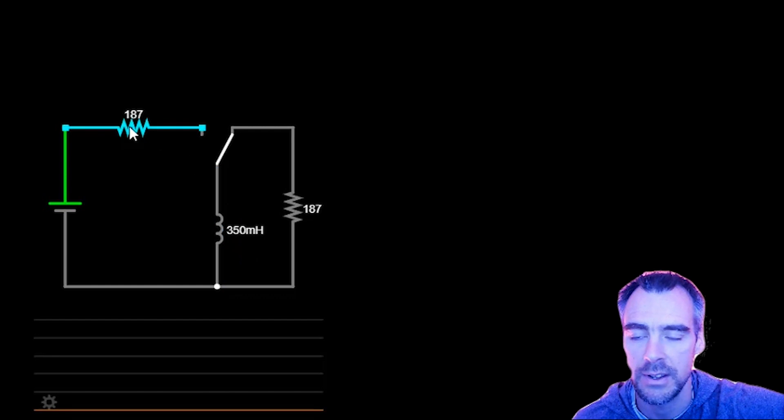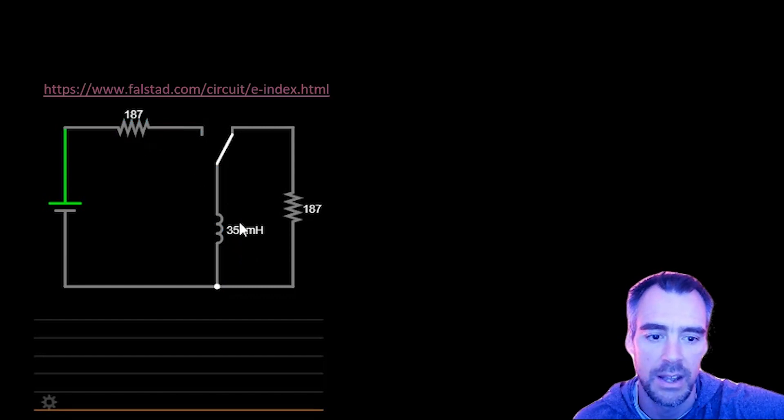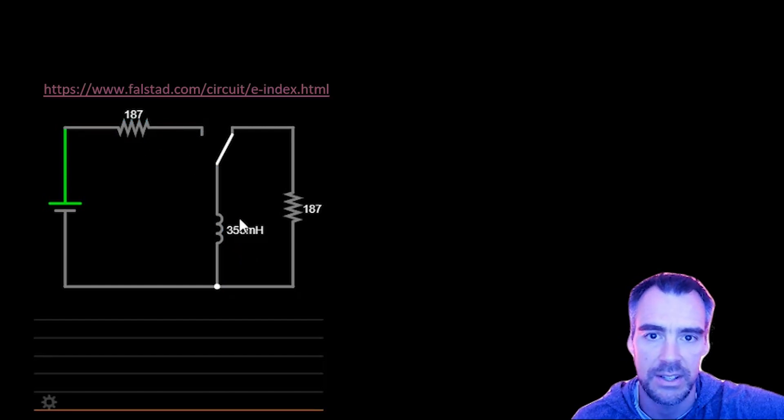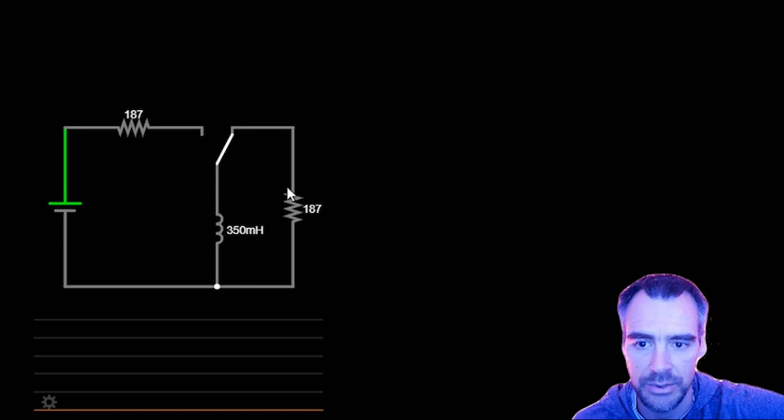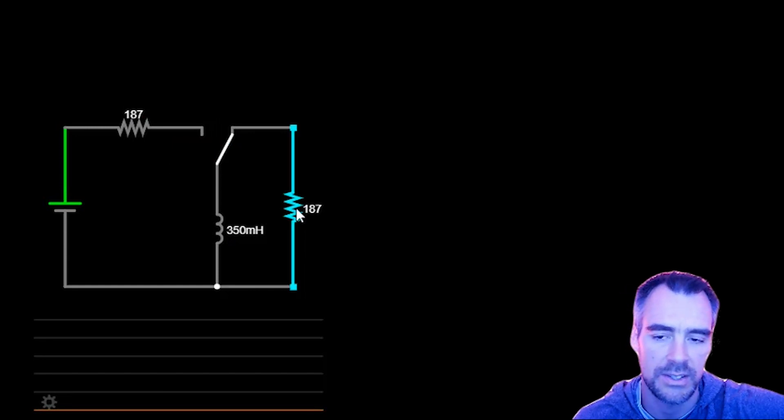First, let me start off with a discussion of just inductors and how they work. Let's check out this circuit here with Falstad.com, where you can make circuits and simulate them. Here we have a circuit with a DC voltage source, a resistor, and down here an inductor. I've got an alternate circuit set up here just to show how this discharges.